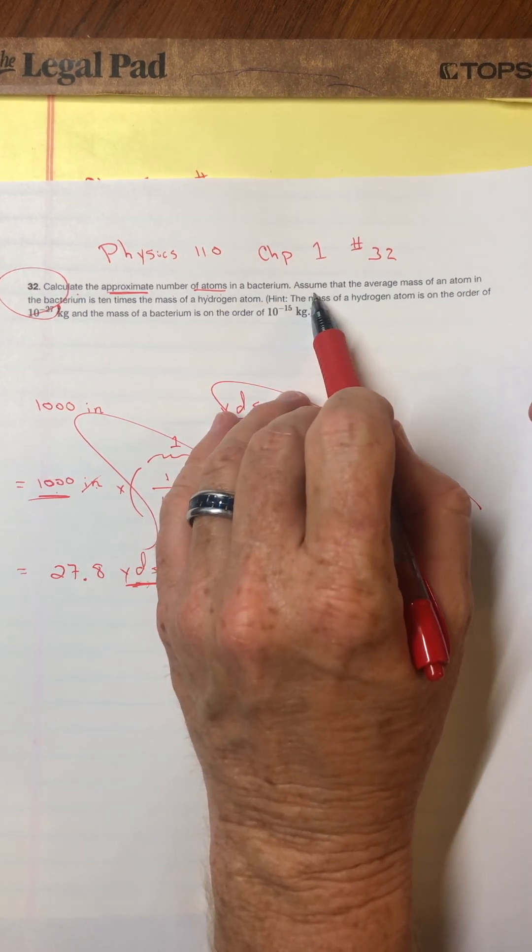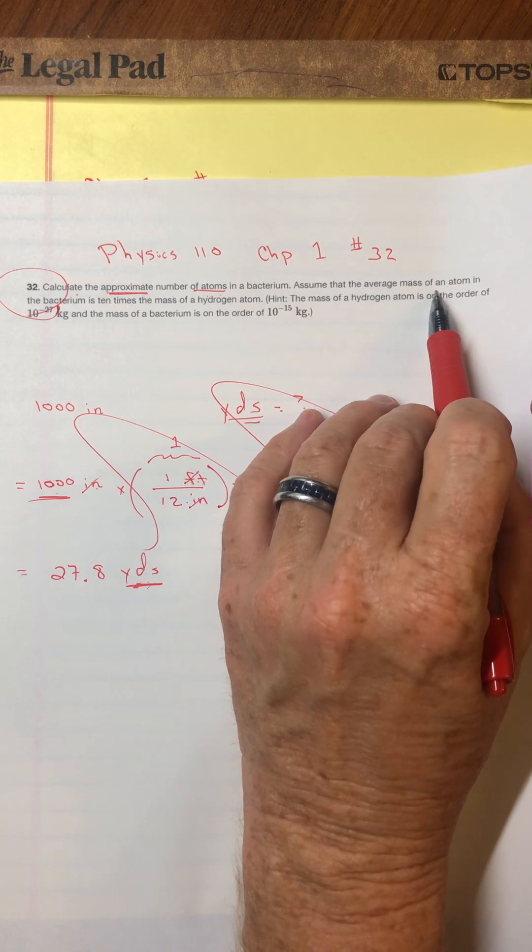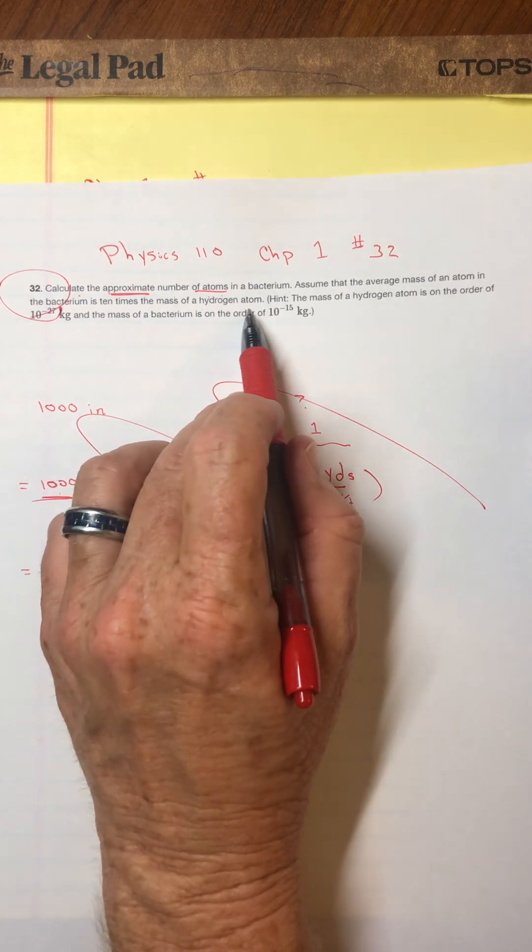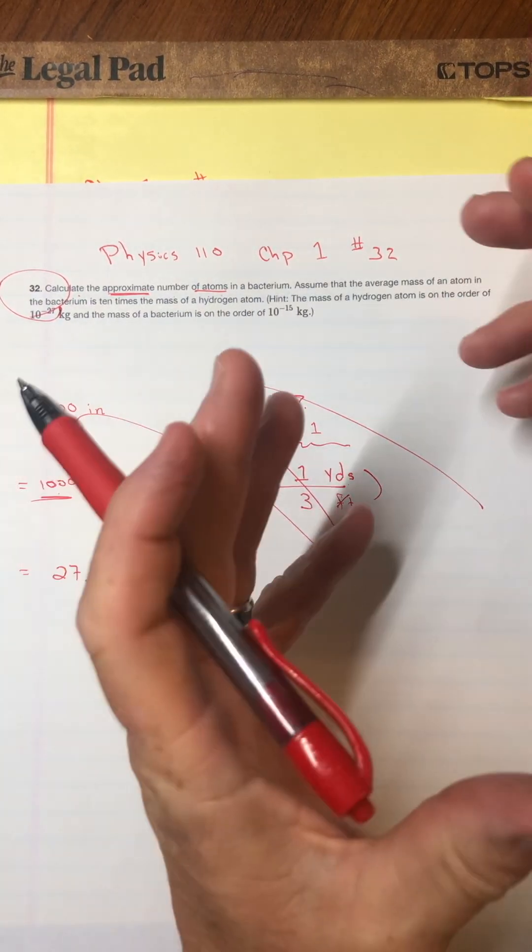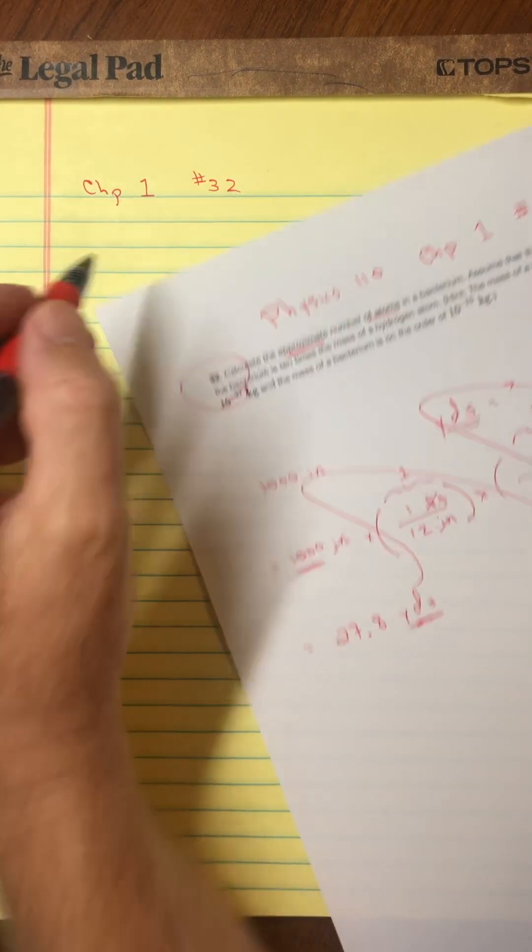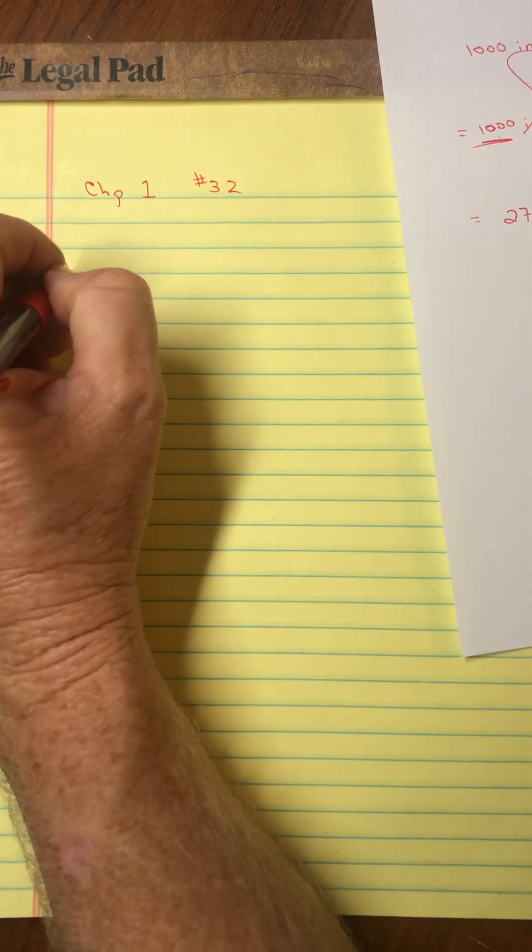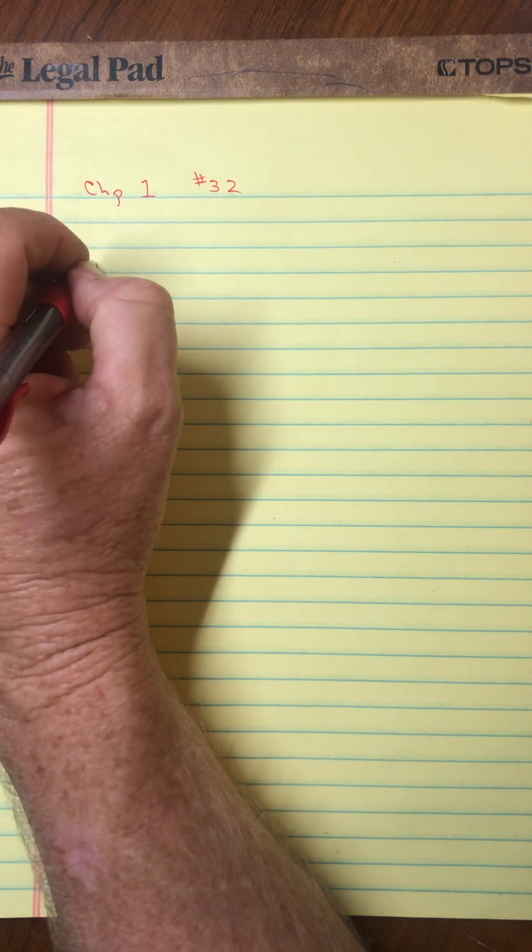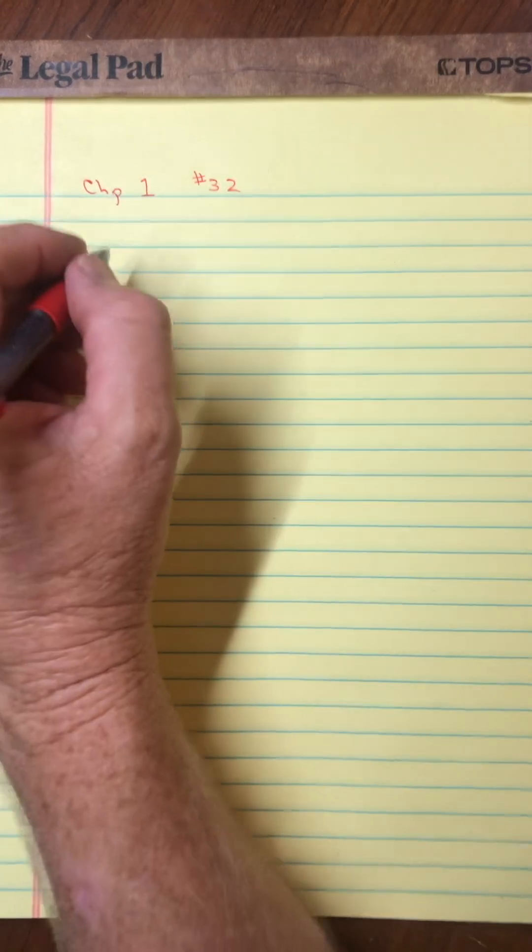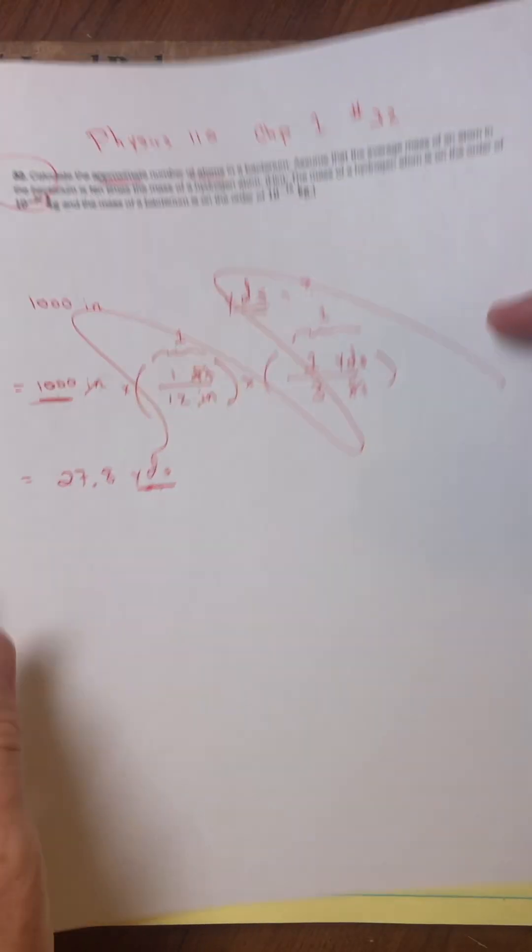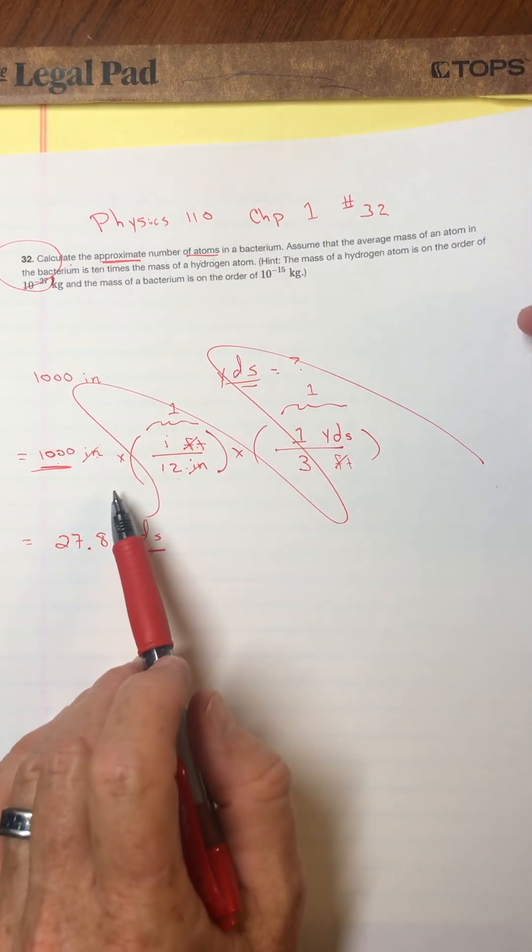So we want to know the number of atoms in a bacteria. It says assume that the average mass of an atom is about 10 times that of the mass of a hydrogen atom. So there's my first conversion, there's my first connection, and I'll just write that down. That's sort of like somebody telling me how many inches are in a foot. So in other words, I know that there are 10, and I'll just put H's, so 10 hydrogen atoms in your ordinary average atom. I'll just put 1A. So there's my conversion, a 10 to 1 connection instead of a 12 to 1 connection.